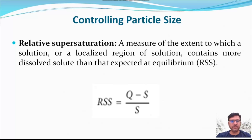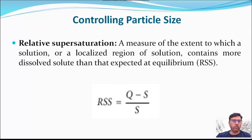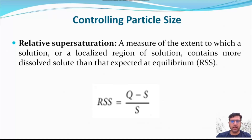We can minimize relative supersaturation by either decreasing the solute concentration or by increasing the precipitate solubility. When precipitates are extremely insoluble and have very small solubilities, a large relative supersaturation cannot be avoided.